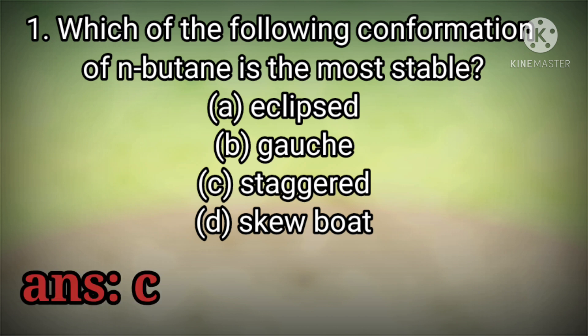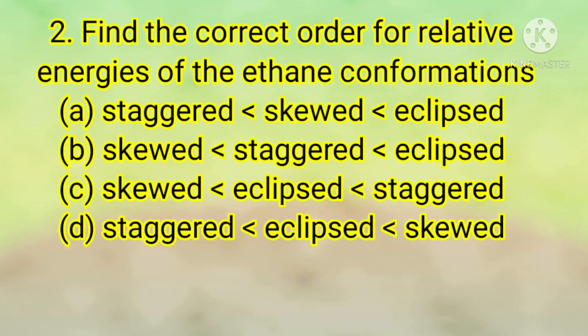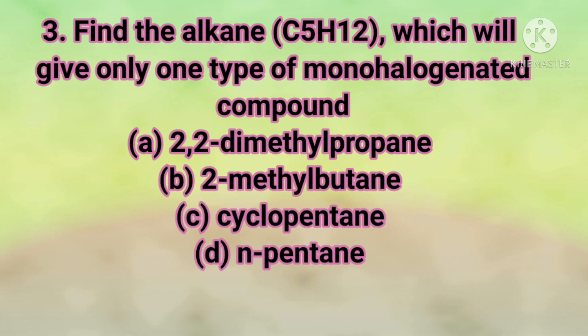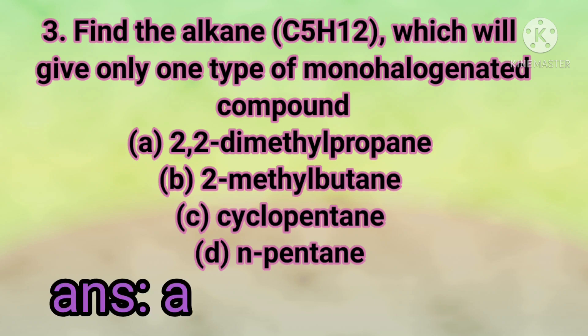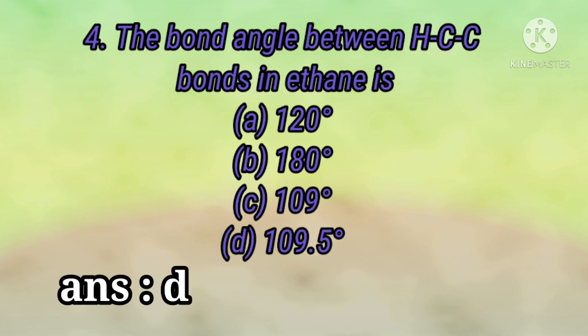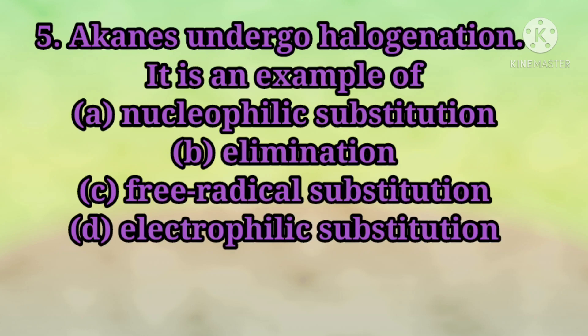The answer is C — staggered type. Find the correct order for relative energies of the ethane conformations: the answer is A — first staggered, then skewed, then eclipsed. Find the alkane C5H12 which will give only one type of monohalogenated compound: answer is A. The bond angle between the HCC bond in ethane is D — 109.5 degrees. Alkanes undergo halogenation, which is an example of C — free radical substitution.